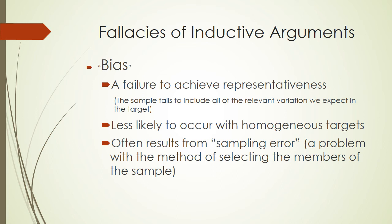Now let's discuss some fallacies of inductive arguments. Bias occurs when there's a failure to achieve sample representativeness. In other words, when the sample fails to include all of the relevant variation that we expect to see in the target population, we know that our sample is not a good basis for an inductive argument. This is less likely to occur with homogeneous target populations, because we're not worried about variety in a homogeneous population, and so we're not going to be concerned with creating variety in our sample group either.